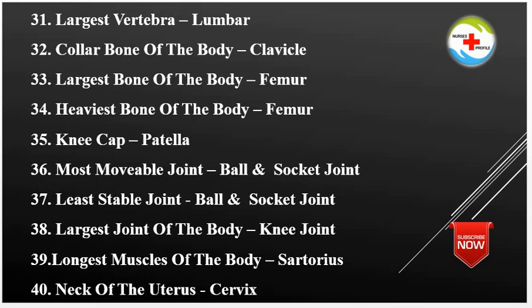Largest Vertebrae: Lumbar Vertebrae. Collar Bone of the Body: Clavicle. Largest Bone of the Body: Femur. Heaviest Bone of the Body: Femur. Knee Cap: Patella. Most Moveable Joint: Ball and Socket Joint. Least Stable Joint: Ball and Socket Joint.